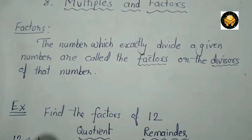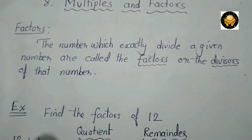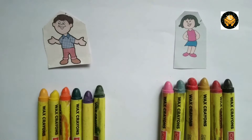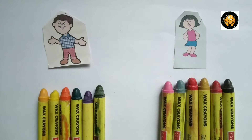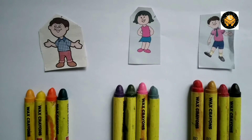Now let's see one activity. If there are 12 crayons and 2 children, and if I want to distribute those crayons among 2 children equally, then each child will get 6 crayons. If there are 3 children, then each child will get 4 crayons.